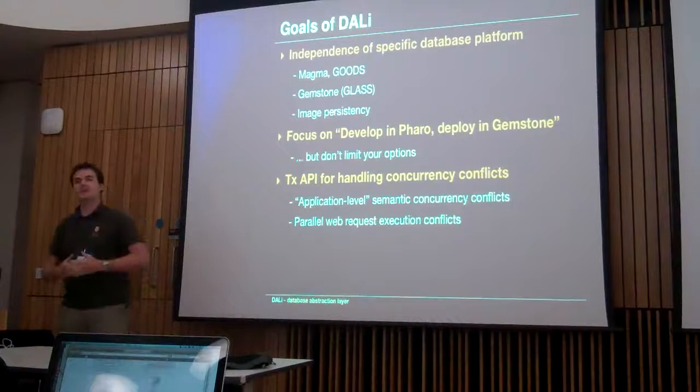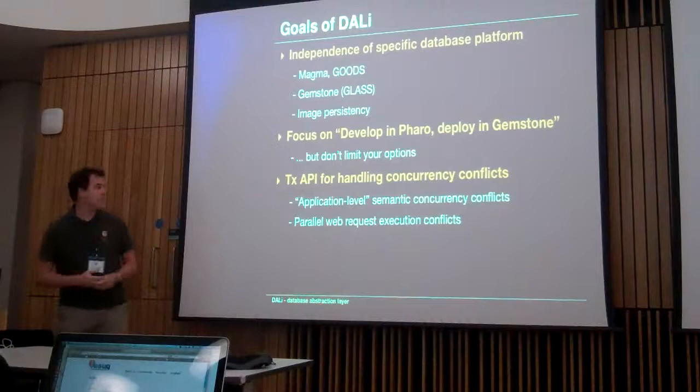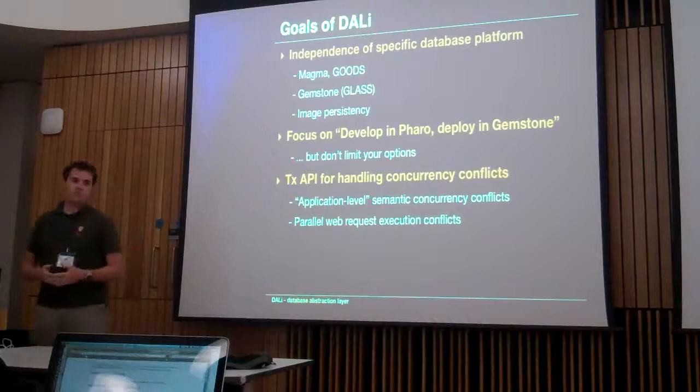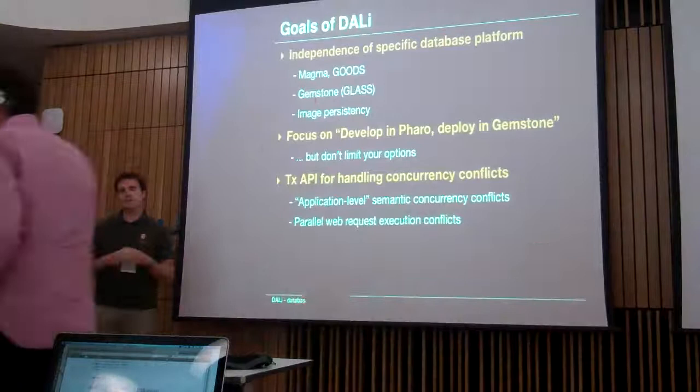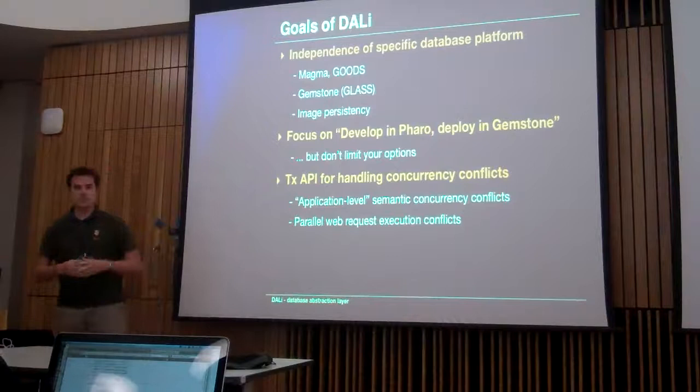The way we use it — and probably the best way to use it — is developing in Pharo and deploying on GemStone. All our development work and primary testing is done in Pharo plus a Goods database, and then we just take the entire same code, except the database abstraction layer, and put it into GemStone and it runs.